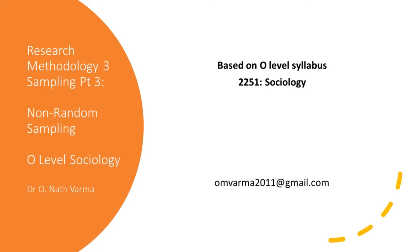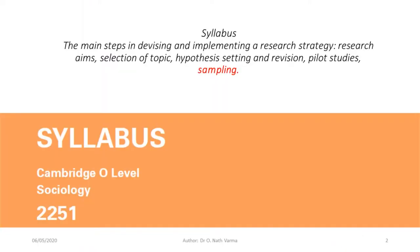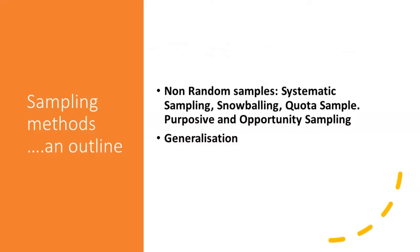Hello again dear students. I hope you are enjoying these lessons in sociology. Today we are looking at the third lesson on sampling and we intend to wrap up with this section of the syllabus. In this lesson we are going to consider non-random samples: systematic sampling, snowballing, quota sampling, purposive and opportunity sampling. We will also consider generalization, which is very closely connected with the issue of sampling.